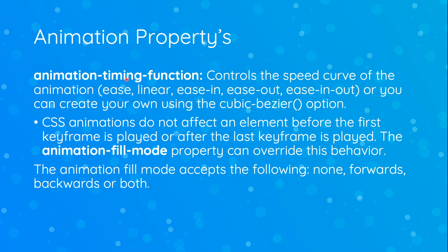Next we have the animation-timing-function property, which controls the speed curve of the animation. The values you can pass are ease, linear, ease-in, ease-out, ease-in-out, or you could create your own using the cubic-bezier option. We're not going to get into creating our own timing function in this video, but if you want to explore that, you can search it on Google — there are websites that let you test and create custom timing functions.